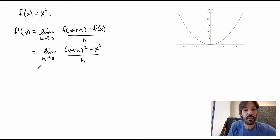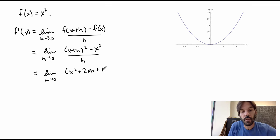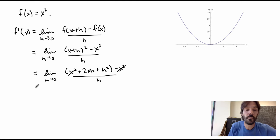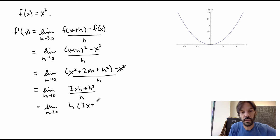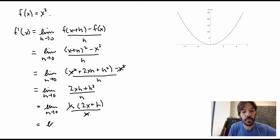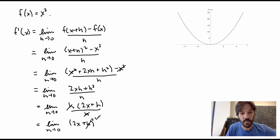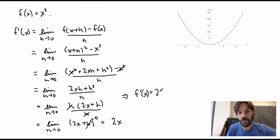To evaluate this limit, the first thing we want to do is expand the square. So we get the limit as h goes to zero of x² + 2x·h + h² minus x² divided by h. Now we see that the x² terms cancel, so what remains is the limit as h goes to zero of 2xh + h² over h. We can factor one power of h in the numerator to get h times (2x + h) divided by h. We can cancel the h, so we get the limit as h goes to zero of 2x + h, which evaluates to 2x.